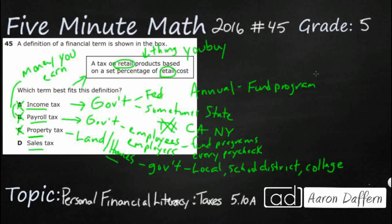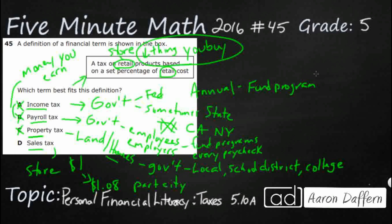Sales tax is when you go to the store and buy something. If you buy something for a dollar, it's usually not a dollar — it turns into a dollar eight because of sales tax, which is part federal government and part city. That's why sales tax ranges from place to place, because each city has their own chunk. That is when we buy stuff, which is what we're looking for. A tax on retail products based on a set percentage of retail cost — retail means store and you're buying stuff. So our answer is D.